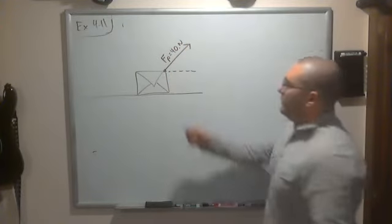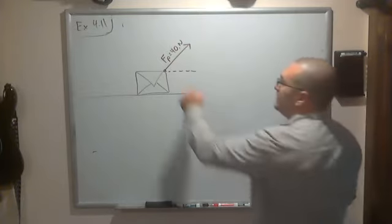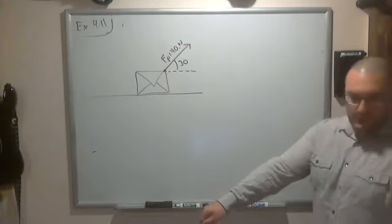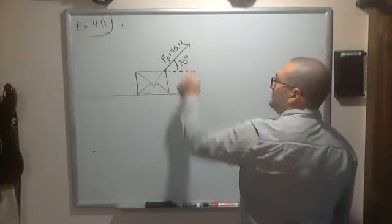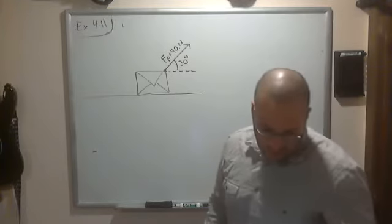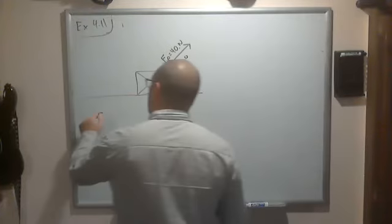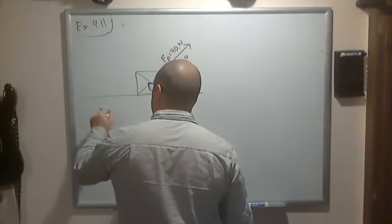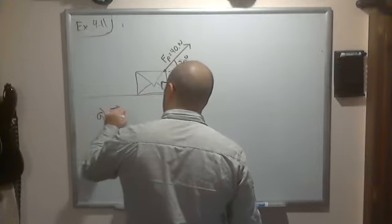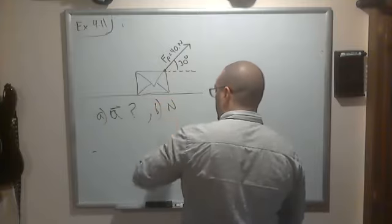And we don't pull it exactly normal, right? Whenever you pull on something, it's always at an angle. The present is kind of small relative to where we're standing, so we're pulling it upwards at 30 degrees. For part A, what is the acceleration of the box? What is the net acceleration? And then part B is what is the normal force?